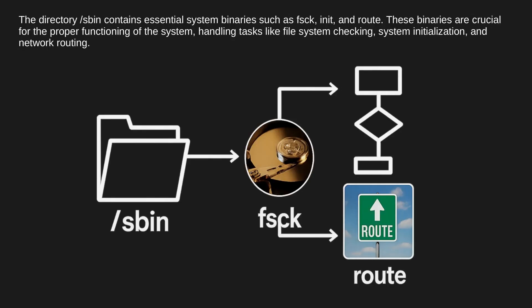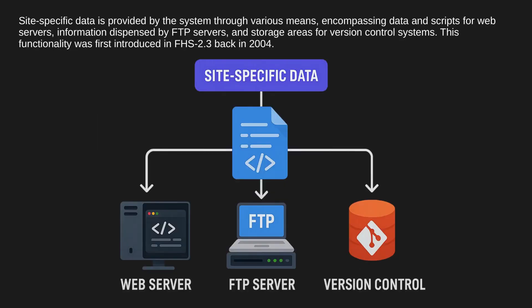The directory /sbin contains essential system binaries such as fsck, init, and route. These binaries are crucial for the proper functioning of the system, handling tasks like file system checking, system initialization, and network routing. Site-specific data is provided by the system through various means, encompassing data and scripts for web servers, information dispensed by FTP servers, and storage areas for version control systems.